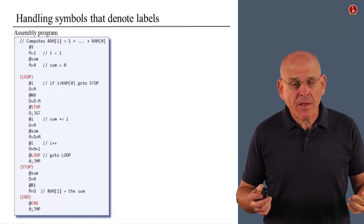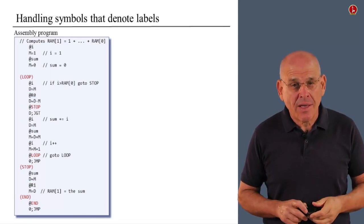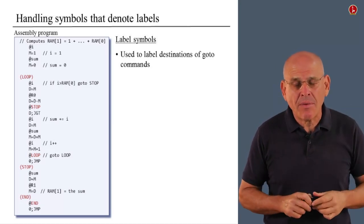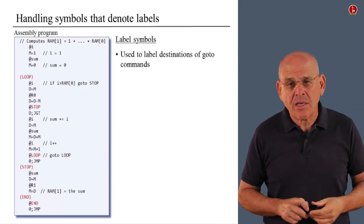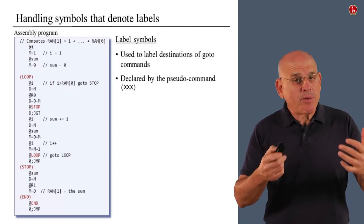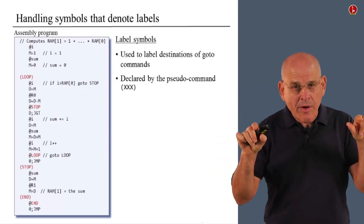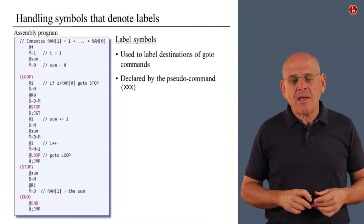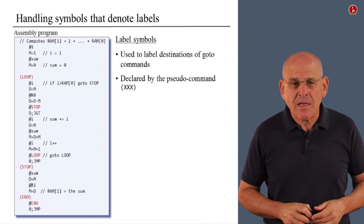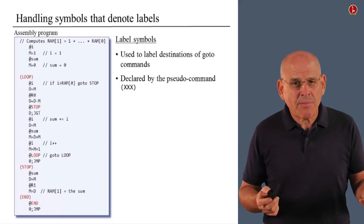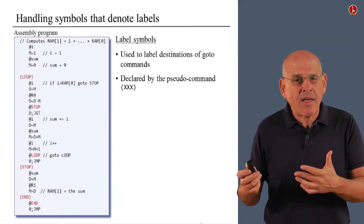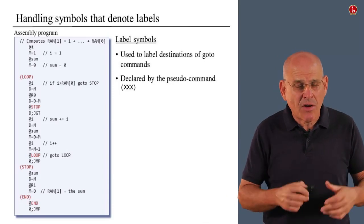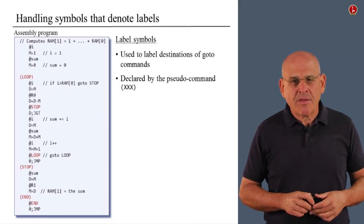The next category of symbols that we have to deal with are symbols that denote labels. Label symbols are used to denote destinations in the program that I may want to jump to using goto commands. And they are declared very specifically using the pseudocommand round parentheses and the name of the label in the middle. I've used XXX to stand for this label, which can be any sequence of characters. These things are called pseudocommands because they don't generate any code. When we translate the program into binary, we don't translate the label declaration instructions, and that's why they're called pseudocommands.